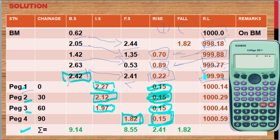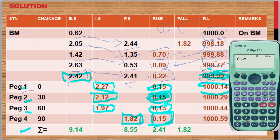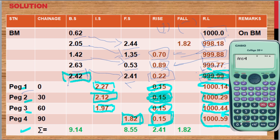After that, you add the obtained values to the last reduced level. Adding 999.99 plus 0.15 gives 1000.14. Again, 1000.14 plus 0.15 gives 1000.29. Adding 0.15 again gives 1000.44. Finally, 1000.44 plus 0.15 gives our last reduced level as 1000.59. That is how simple the calculation is done.